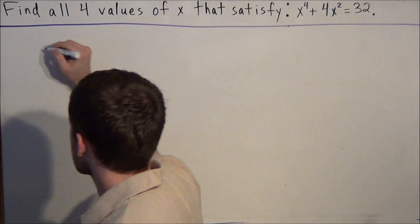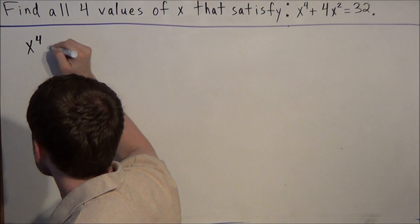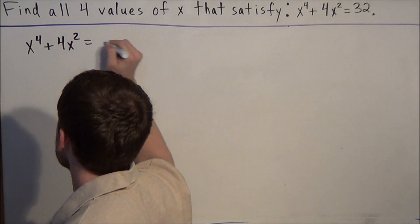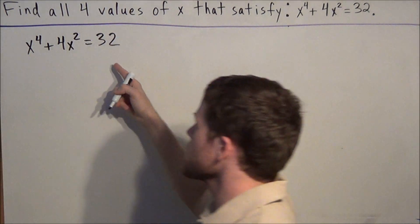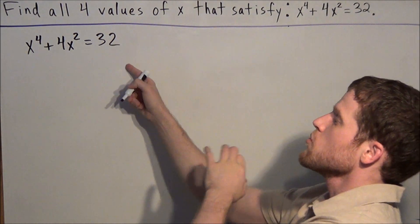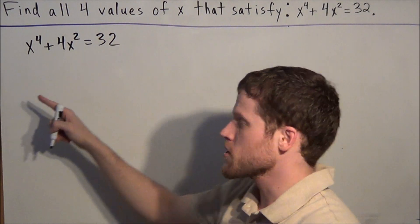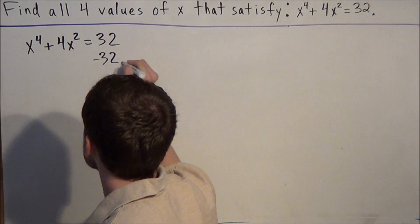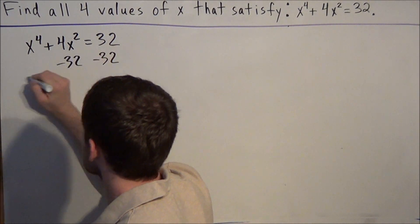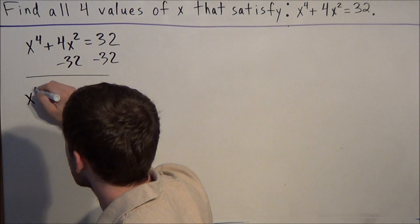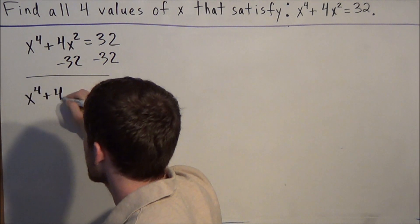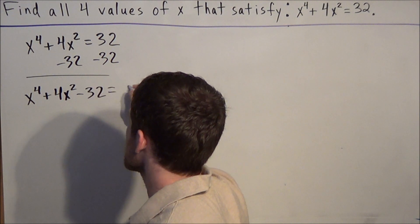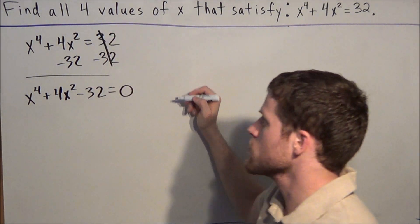If we look at this equation, the strategy is going to be to treat this kind of like a quadratic equation. The first thing we want to do is move 32 over to the left side, because we need zero on the right-hand side. So we subtract 32 from both sides, and we have x to the fourth plus 4x squared minus 32 equals zero, because 32 minus 32 will cancel out.